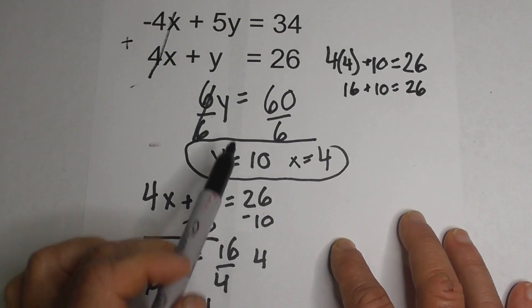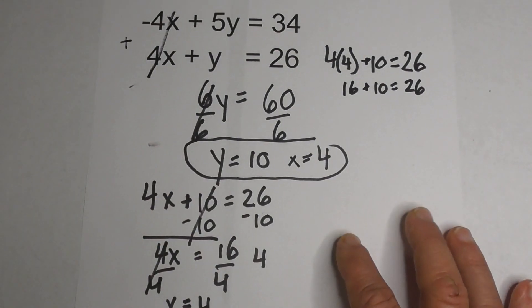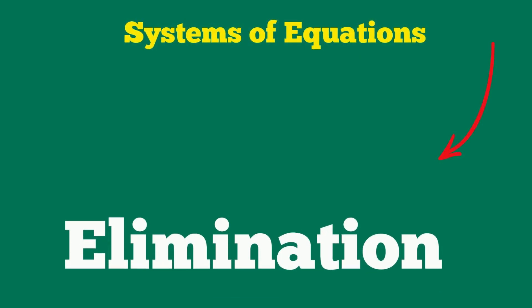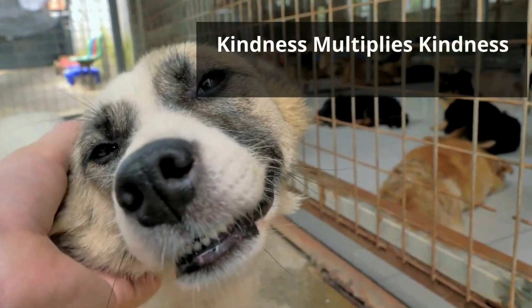And that is y for both of these equations is 10 and x is going to be 4. So sometimes the two equations don't have an x or y cancel, and you have to multiply one by a number. This video will help. And remember, kindness multiplies kindness. Be kind to someone today.